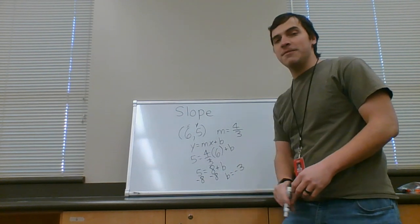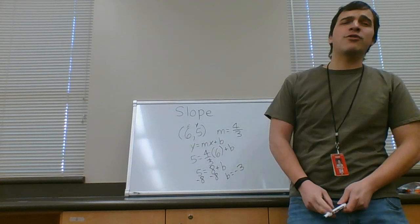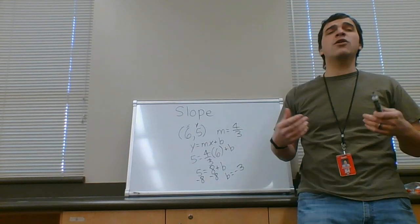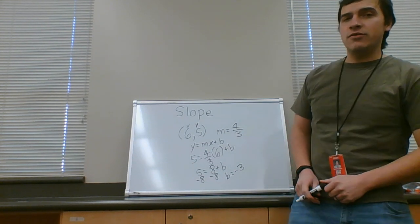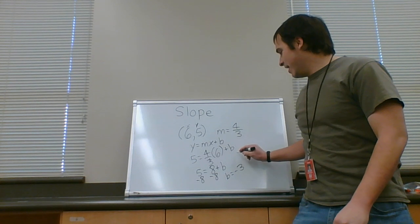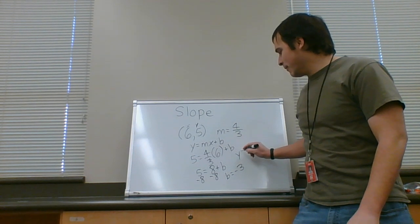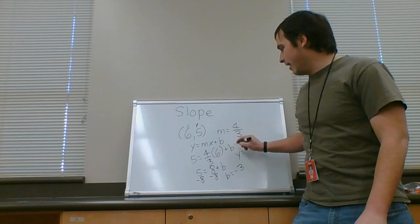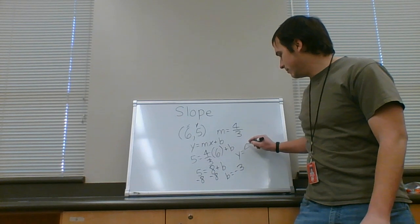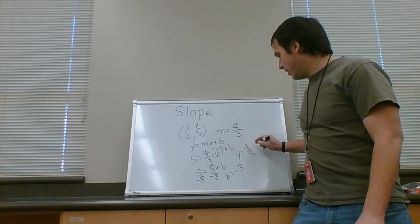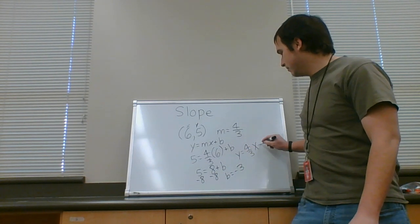b equals negative three. We solved for b, but that wasn't actually my answer. The question was, what is the equation of the line? So, the equation of the line is usually in the form y equals mx plus b, so y equals m, which is four thirds, x plus b minus three.